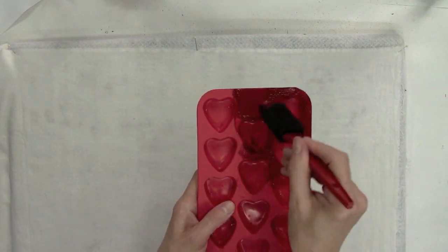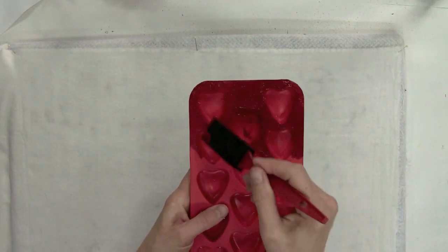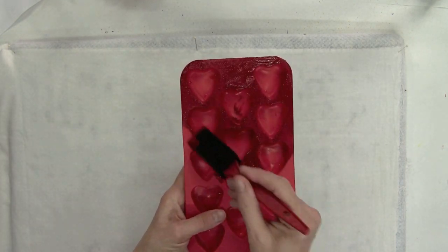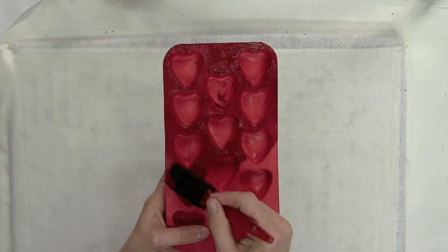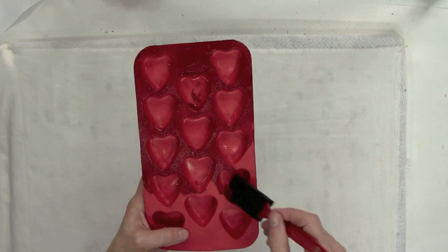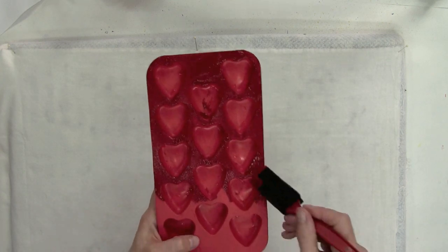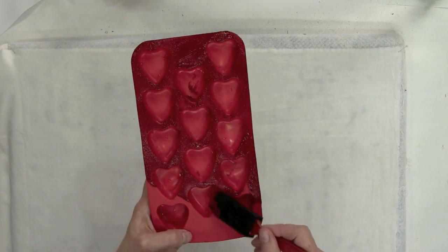I'm just applying the paint on the surface here. You could also use thickened dye, but I'm just using some fabric paint to do this quickly.